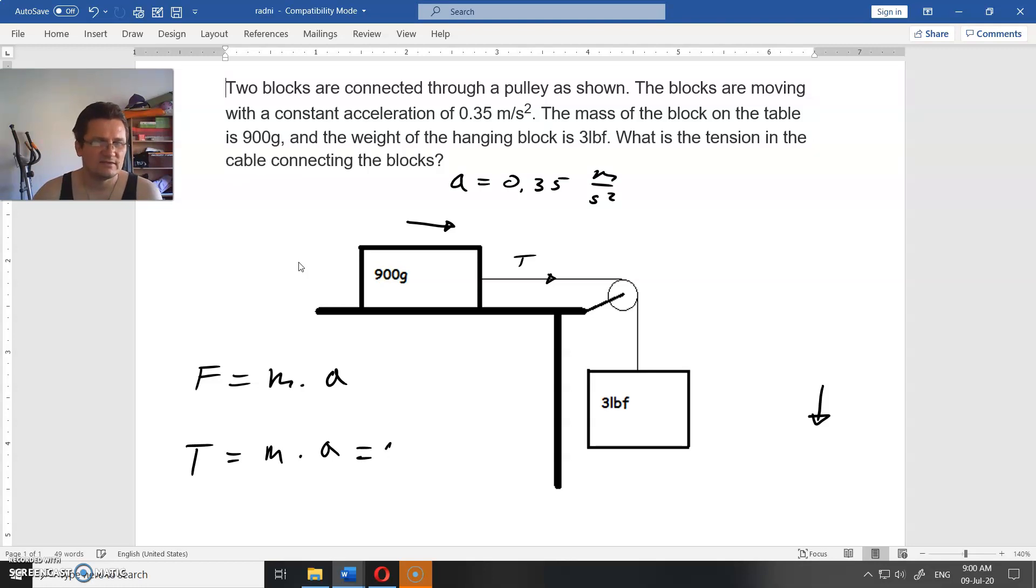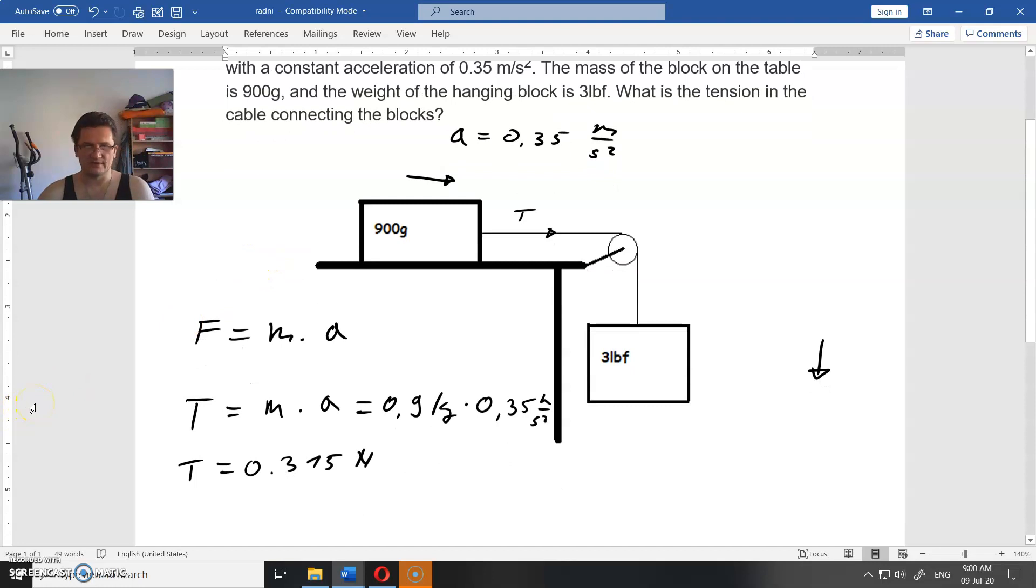900 grams is 0.9 kilograms, and acceleration is 0.35 meters per second squared. So tension or the force in that rope is 0.9 times 0.35, and that force is 0.315 Newtons. That is the end of the assignment. There is no need to calculate anything else.